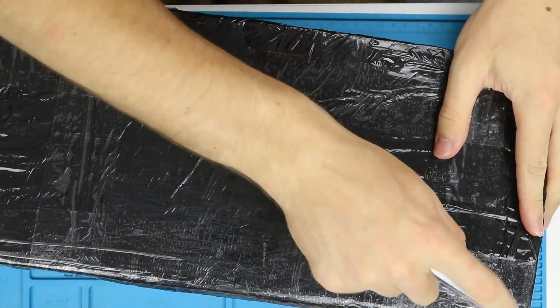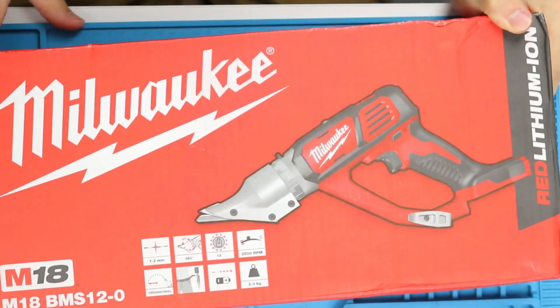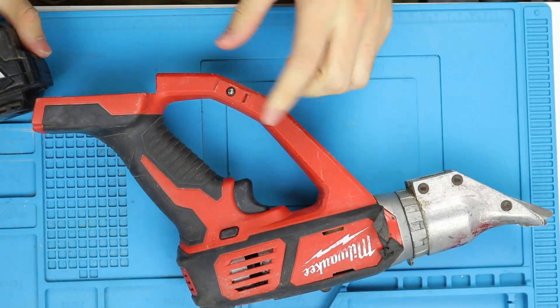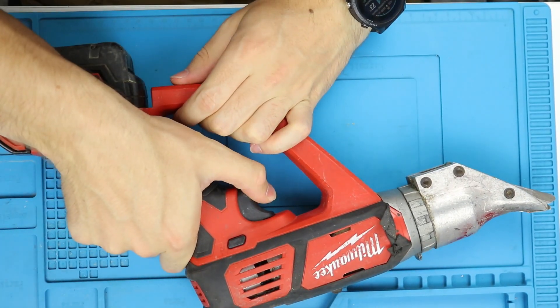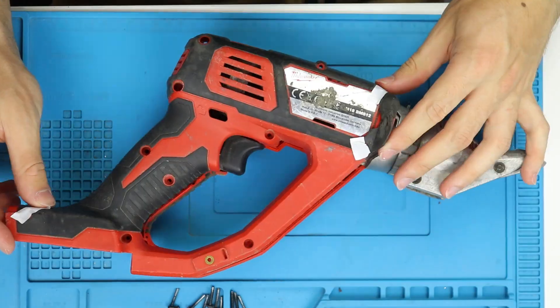Hey guys, today we got the M18 metal shears with the model name M18BMS12-0. As you can hear, when we pull the trigger there is some audible coil whine, so let's open them up.